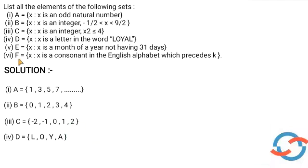Next question. E is equal to the set of all x such that x is a month of year not having 31 days. So 30 days and February. Let's answer that.